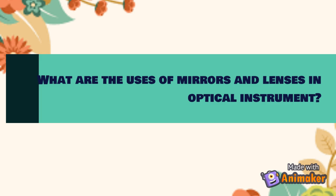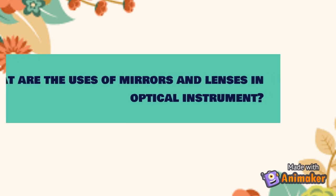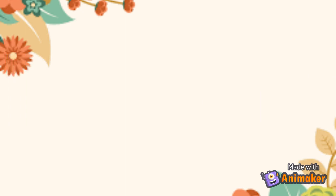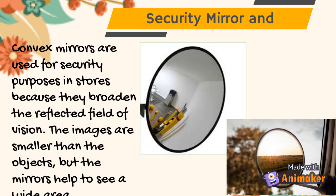So what are the uses of mirrors and lenses in optical instruments? The following information describes some properties of mirrors and lenses and explains how light reflects and recreates images. Let us find out how these properties are used in common optical instruments. First, we have security mirrors and sight mirrors. Convex mirrors are used for security purposes in stores because they broaden the reflected field of vision. The images are smaller than the objects, but the mirrors help to see a wide area.